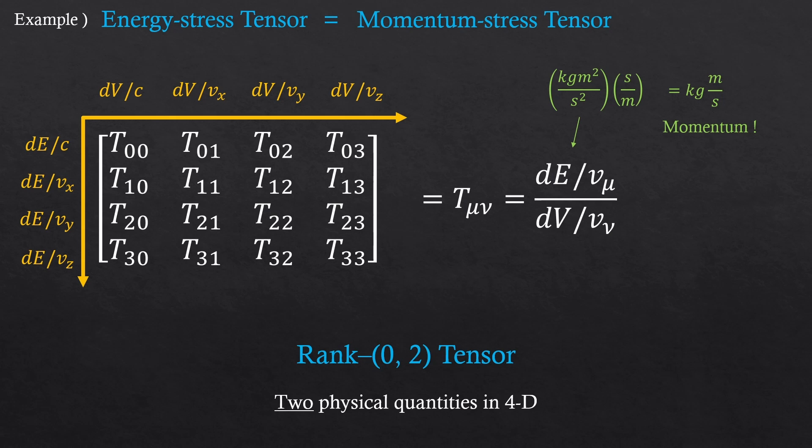Then should we not use the name energy stress tensor anymore, and just use the name momentum stress tensor? No, we can still call it the energy stress tensor, even if energy isn't a vector quantity. Why is that? From special relativity, if time component is treated as another dimension when multiplied by the speed of light, time is just another type of direction. So in 4D, at least in terms of time, energy can also be a vector quantity.